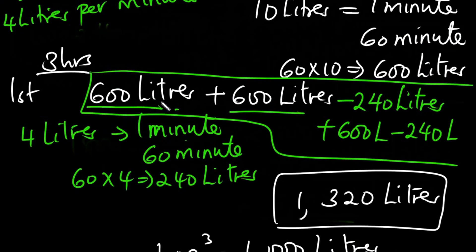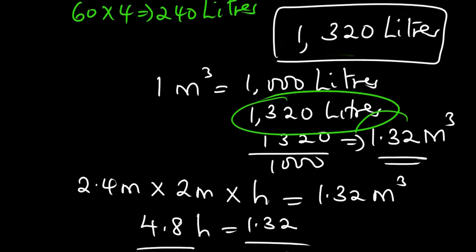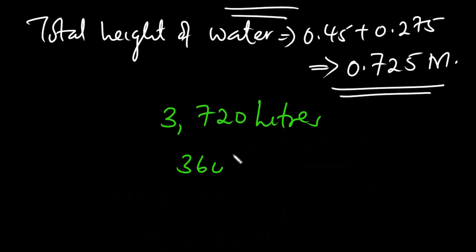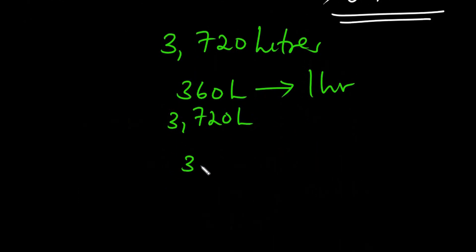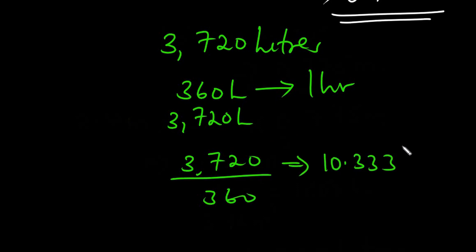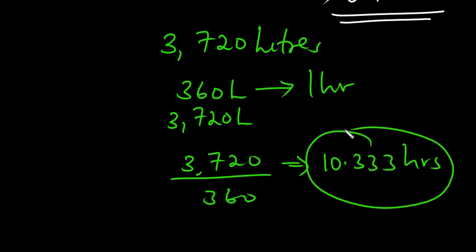In the first hour, 600 liters got in. From the second hour onward there was 600 liters in minus 240 liters out, giving a net of 360 liters per hour. So if 360 liters get into the tank per hour after the first hour, then for 3,720 liters we divide: 3,720 divided by 360, which gives 10.333 hours.